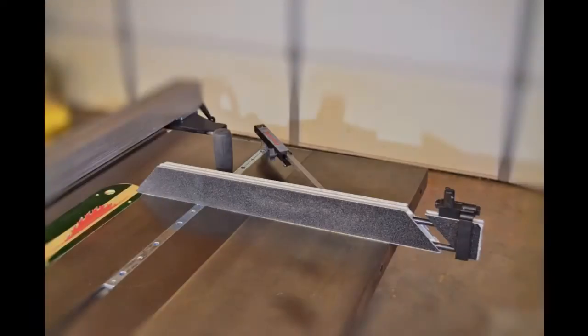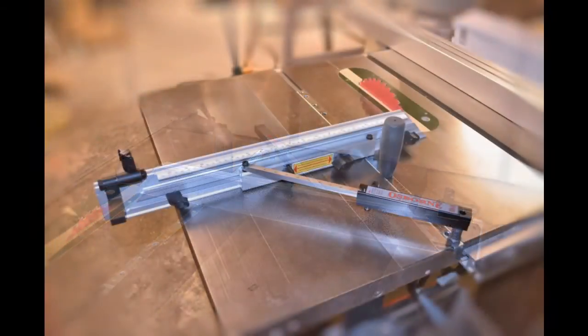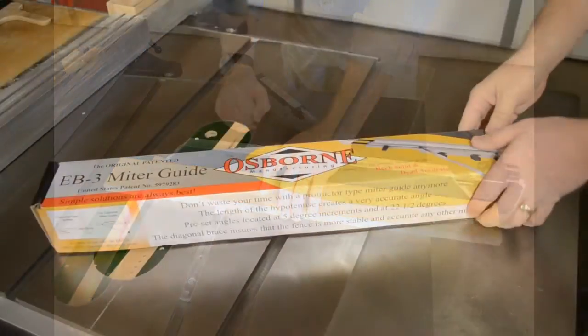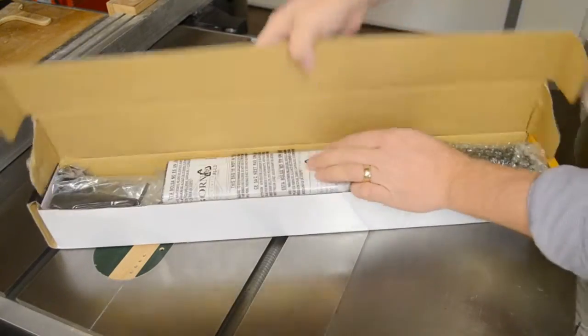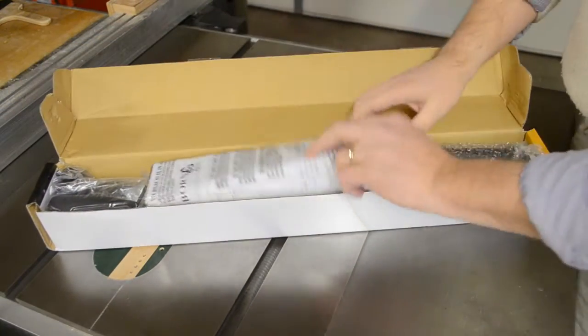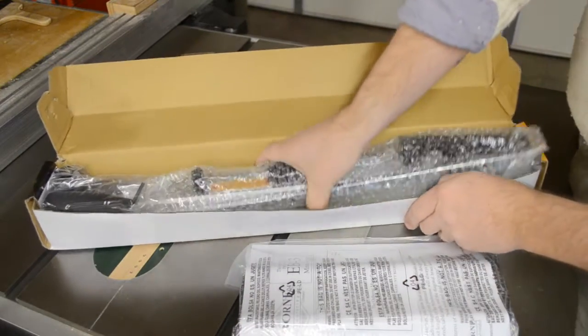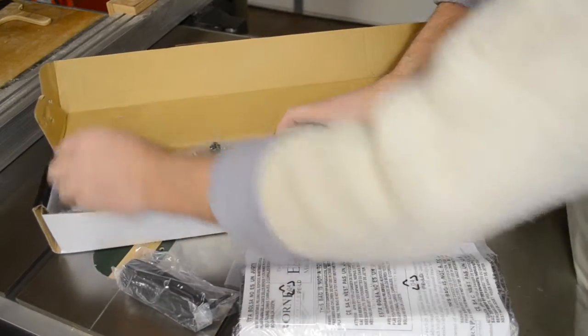The Osborne EB3 miter guide takes just a few minutes to assemble and set up ready for use. On opening the box, you should find a fully illustrated instruction book, a warranty registration card, two small hardware packages.